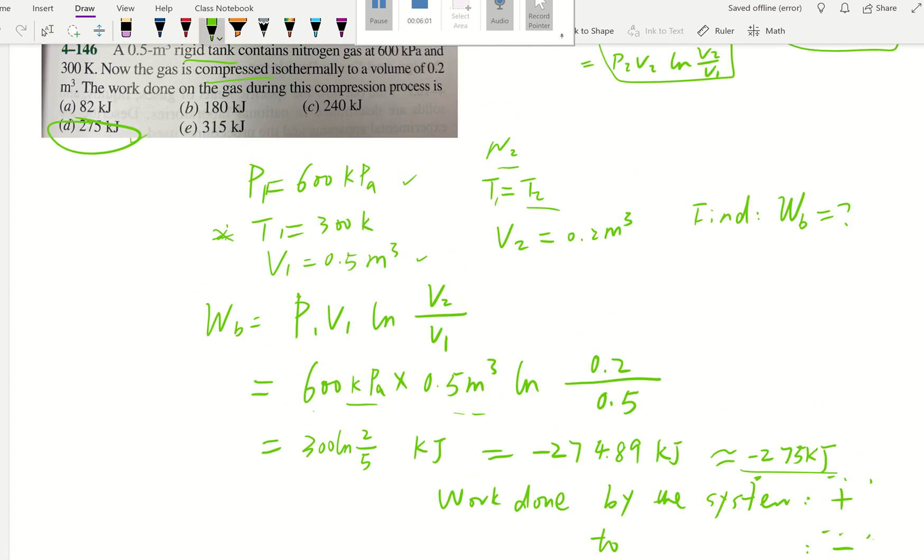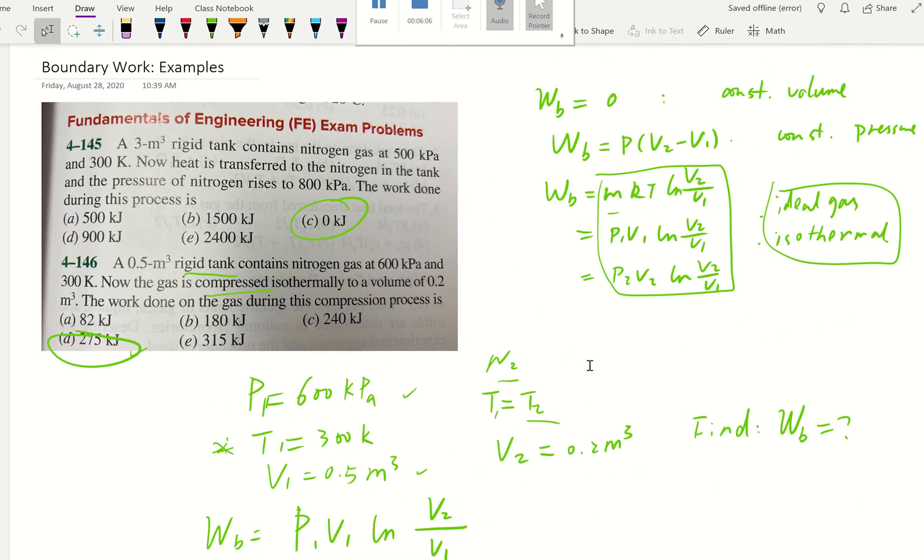That's going to be the end of this video, boundary work example. Hopefully we can feel confident using boundary work equations and make our judgment, see which one to use. I really like problem one, zero kJ, because it's a rigid tank. They can have lots of noises, but boundary work is zero since it's a rigid tank and volume stays constant. That's all for this one. See you next time. Bye.